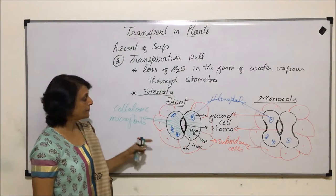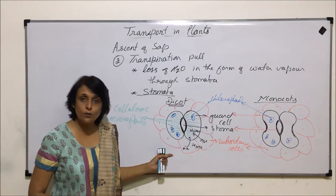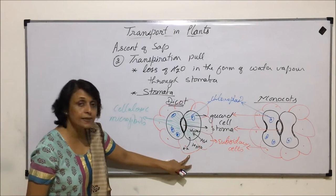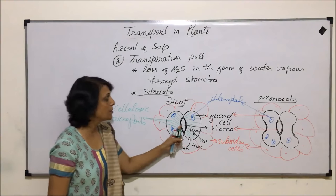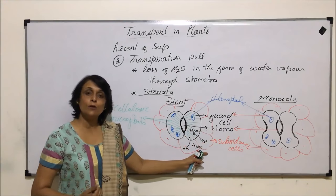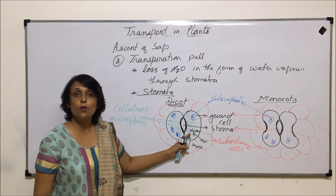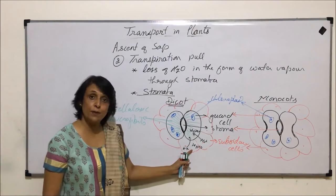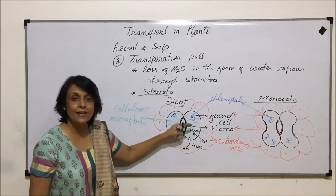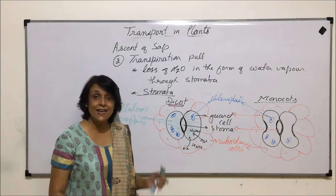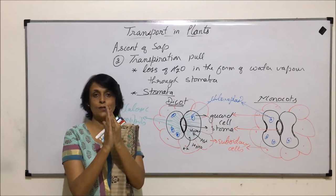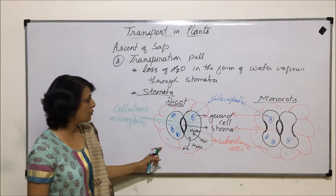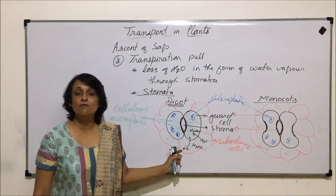Later we will also talk about one more hypothesis for opening and closing known as the starch-glucose theory. In this case, it is ion movement which is responsible. When stomata have to close, ions are actively pumped back to the subsidiary cells. Once the ions are pumped out, the concentration in guard cells decreases and they become hypotonic, while subsidiary cells become hypertonic. Water then moves from guard cells to subsidiary cells, the guard cells become flaccid, inner walls become loose and come closer, and the stoma narrows and finally closes. Opening and closing of stomata is controlled by ion movement followed by passive movement of water.